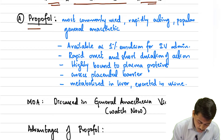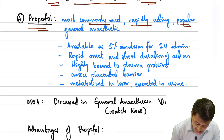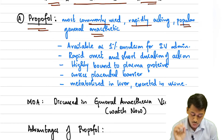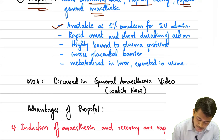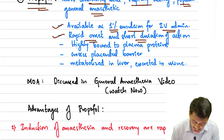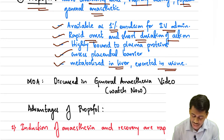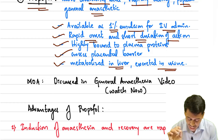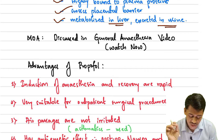Moving on to the first drug, propofol. Propofol is the most commonly used, rapidly acting, popular general anesthetic. It is available as a 1% emulsion for IV administration. It has a rapid onset of action as well as a short duration of action. It is highly bound to plasma proteins, crosses the placental barrier, is metabolized in the liver, and is excreted in the urine.